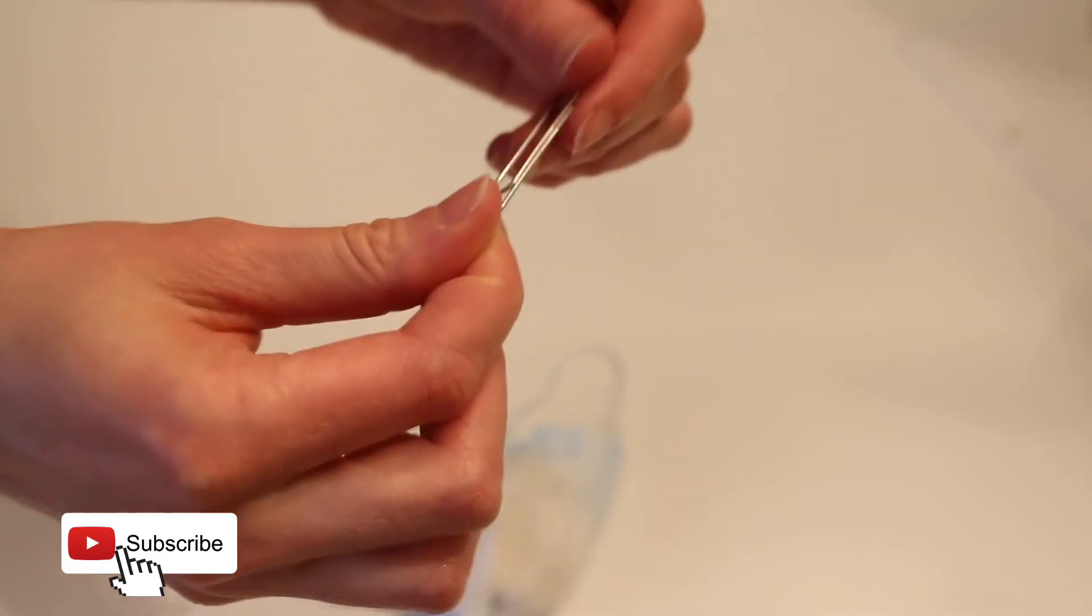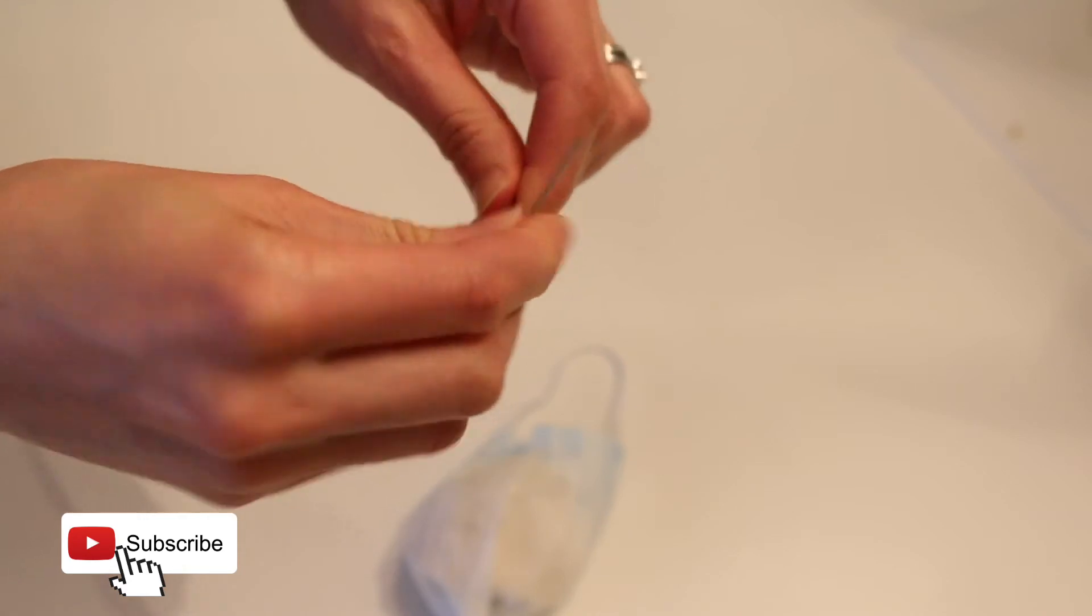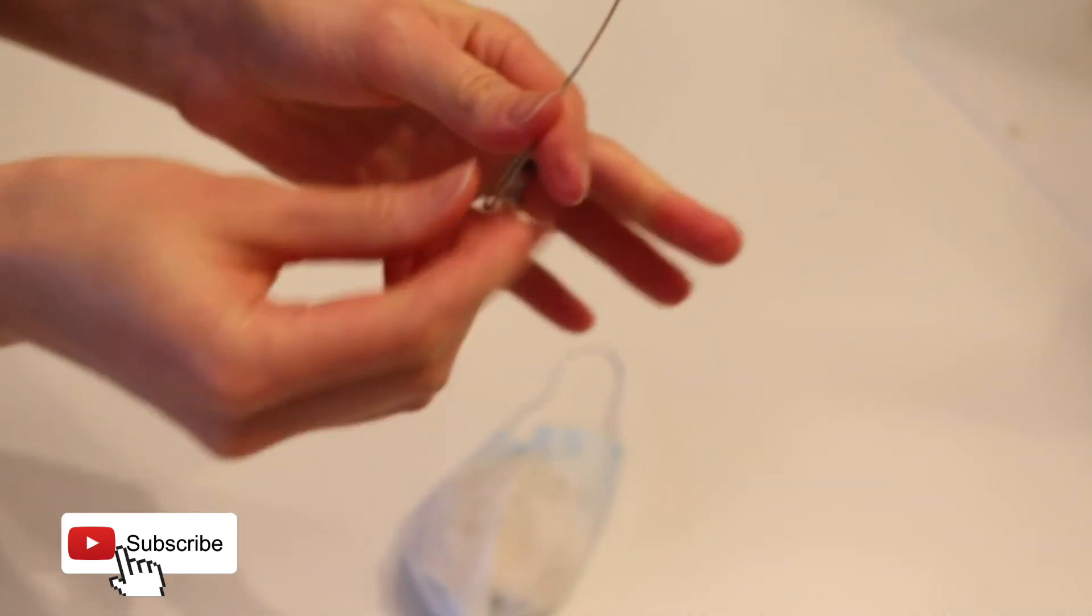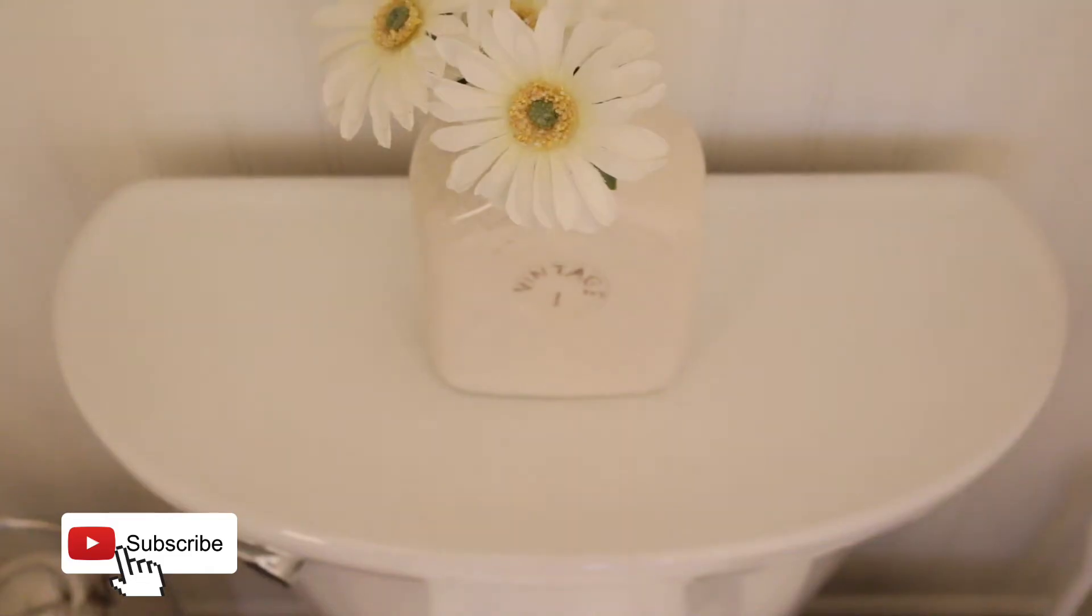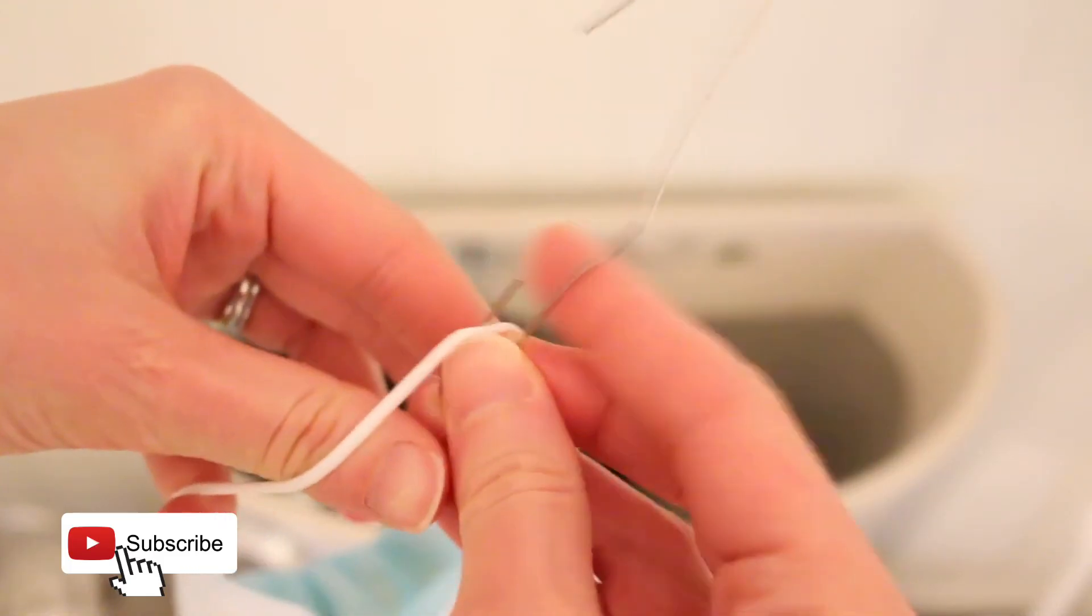Now grab a large paper clip and unfold it to make a hook. With the loop piece of the mask, hang the face mask on the paper clip and head to the toilet. Every toilet is going to be different but try to find a place to hang the face mask inside the toilet's tank. You may or may not need the paper clip.